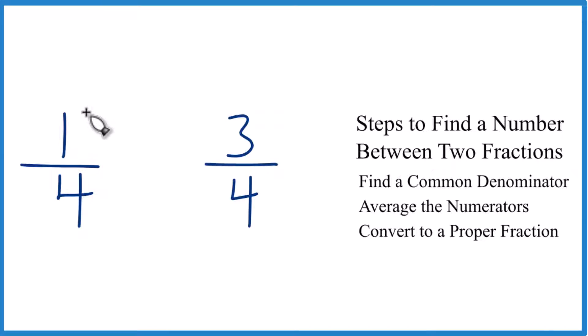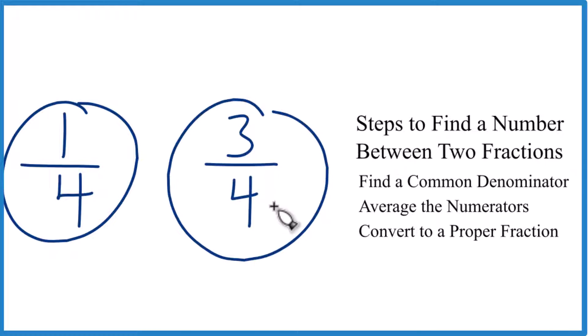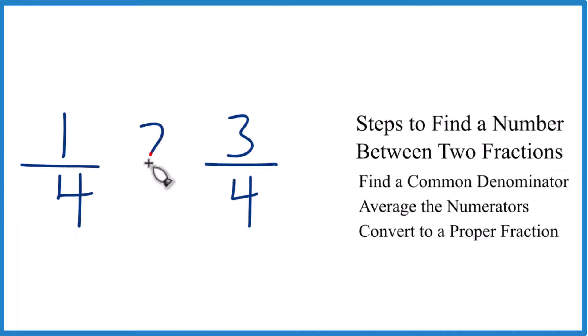So let's figure out what fraction is between 1/4 and 3/4. We want to know what number or what fraction is between 1/4 and 3/4. We'll use these steps here. First step is we find a common denominator, but we already have one. So we're done with that.